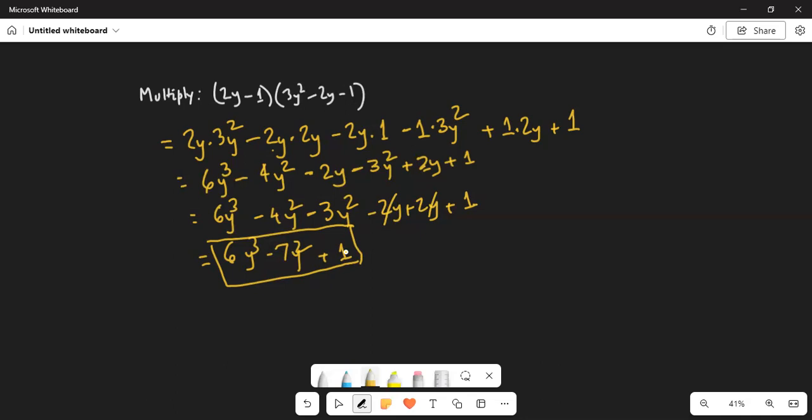My hint is, what did I do? I took each term in the first term and distributed it to each term in the second term. Distributed means each term in the first polynomial is multiplied to each term in the second polynomial.